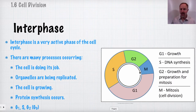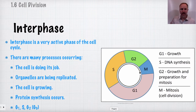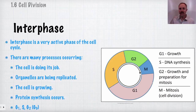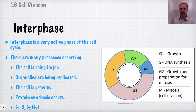Interphase is a very active portion of the cell cycle with a lot of processes occurring. The cell is doing its job — organelles may be replicated or replaced, the cell is growing, and protein synthesis is occurring. G1, S, and G2 all comprise interphase, completely separate from the M phase. In G1, the first growth phase, cells that aren't dividing — like muscle and nerve cells — may enter a phase known as G0.